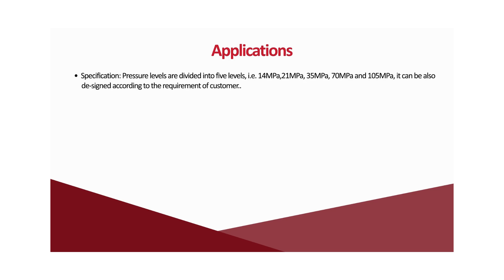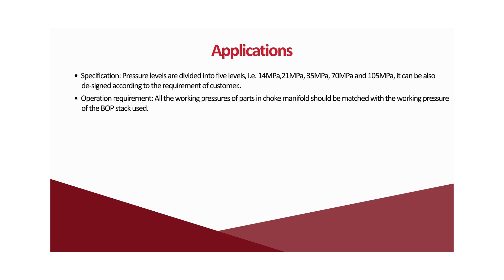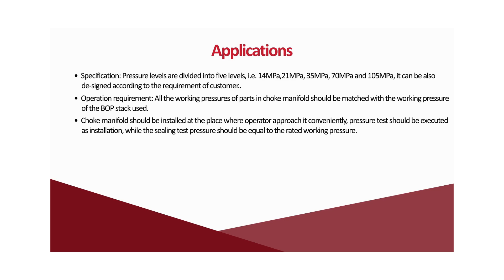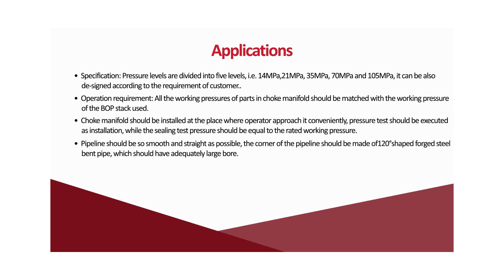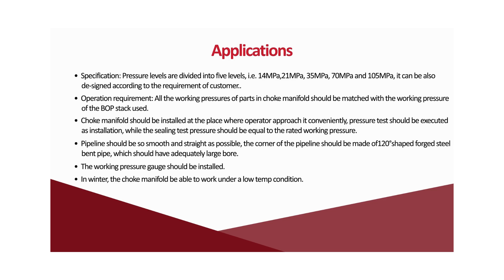Pressure levels are divided into five levels: 14 MPa, 21 MPa, 35 MPa, 70 MPa, and 105 MPa, and can also be designed according to customer requirements. All working pressures of parts in the choke manifold should be matched with the working pressure of the BOP stack used. The manifold should be installed where the operator can approach it conveniently. Pressure testing should be executed upon installation, with the sealing test pressure equal to rated working pressure. Pipeline should be as smooth and straight as possible, using 20-degree shaped forged steel bent pipe at corners with adequately large bore.